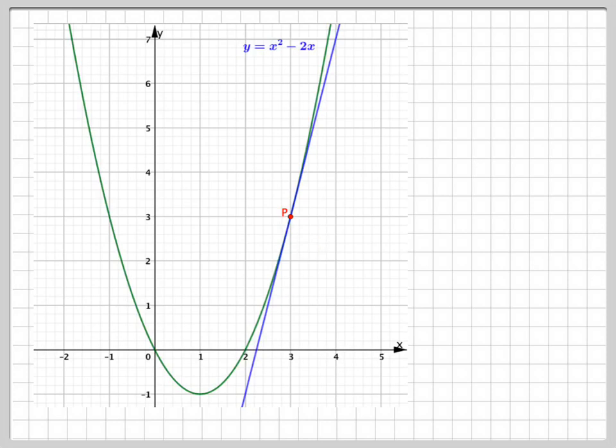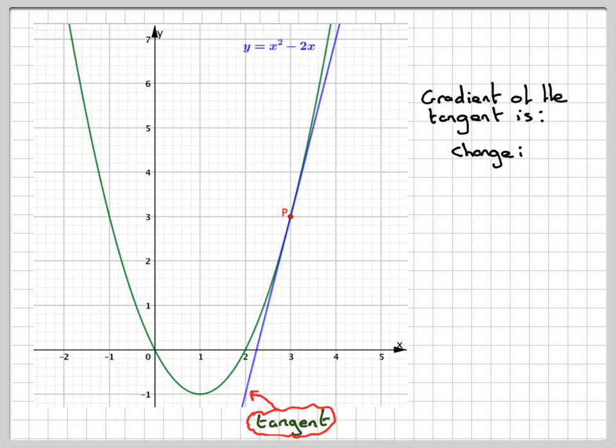Then what we've got to do now is to calculate the gradient. So the gradient at the tangent is the change in Y divided by the change in X. So you need to identify another convenient point. So the change in Y will be that. That's going to be 4 in this case.